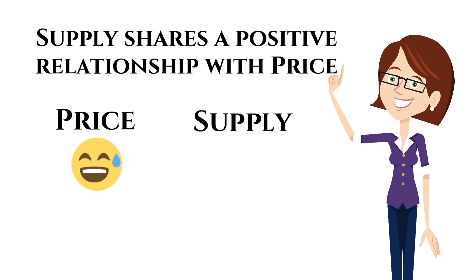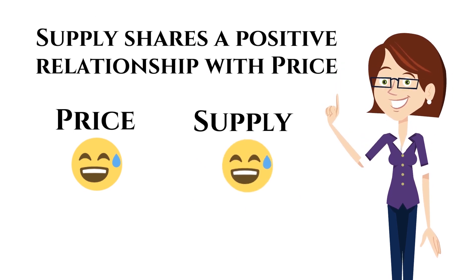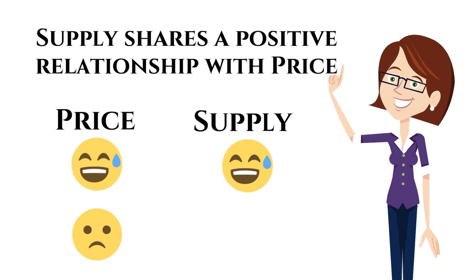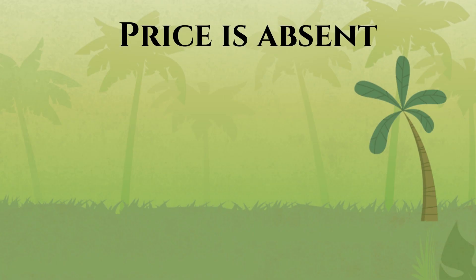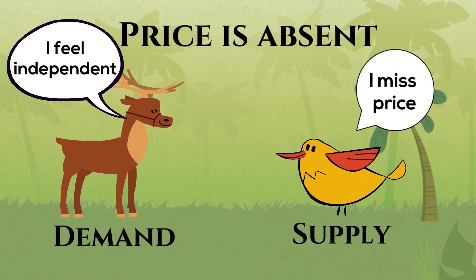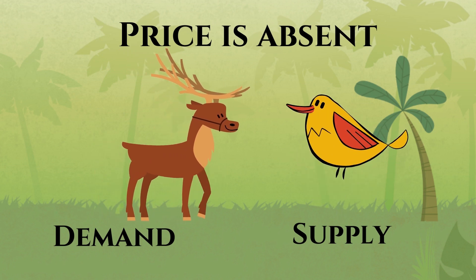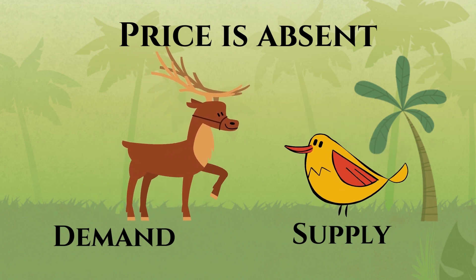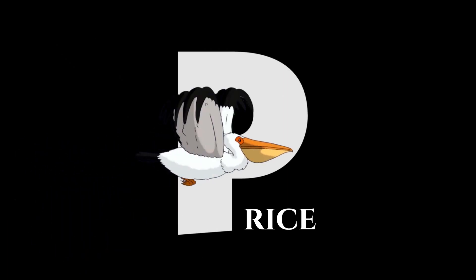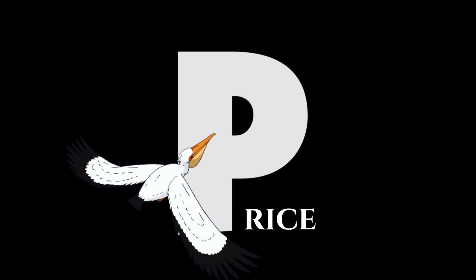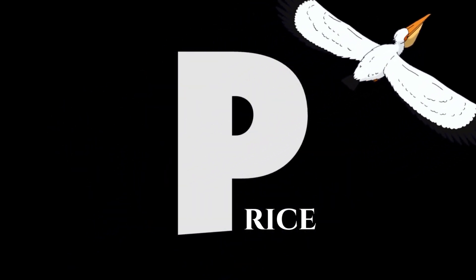If price is sad, supply is also sad. When price is absent, demand feels independent, but supply starts missing the moments spent in the past. Demand and supply look for opportunities to meet each other, but due to their common friendship with price, they fail to meet. Just like any other love story, price hides his love for demand and makes efforts to keep demand and supply happy.